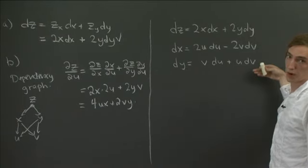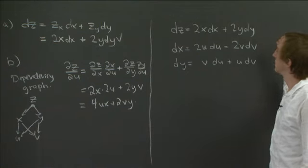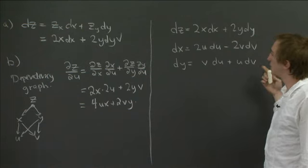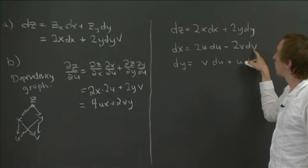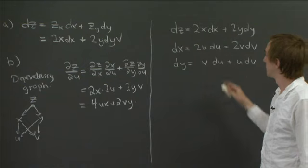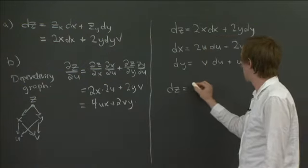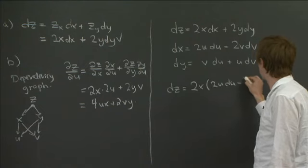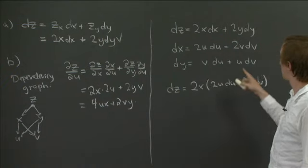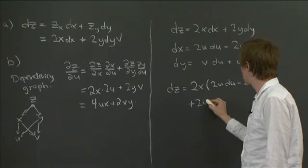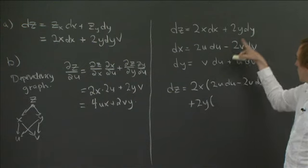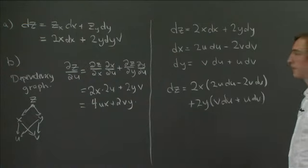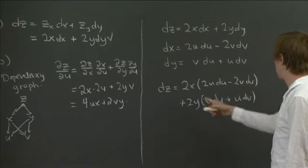And dy, so remember y was uv. So taking d of uv, we get v du plus u dv. So what we've done is we've just listed out all of the total differentials. And the nice thing about this is once you've done these computations, now it's just substitution. So, what we really want to know is we want to know how does z depend on u and v. And so all we need to do is substitute in our formulas for dx here. So this tells us that dz is, so we have 2x. Now instead of dx, we just plug in here. So we have 2u du minus 2v dv. So that was this term. And now we have plus 2y. And now we just plug in this, so v du plus u dv. You see, it's just substitution.